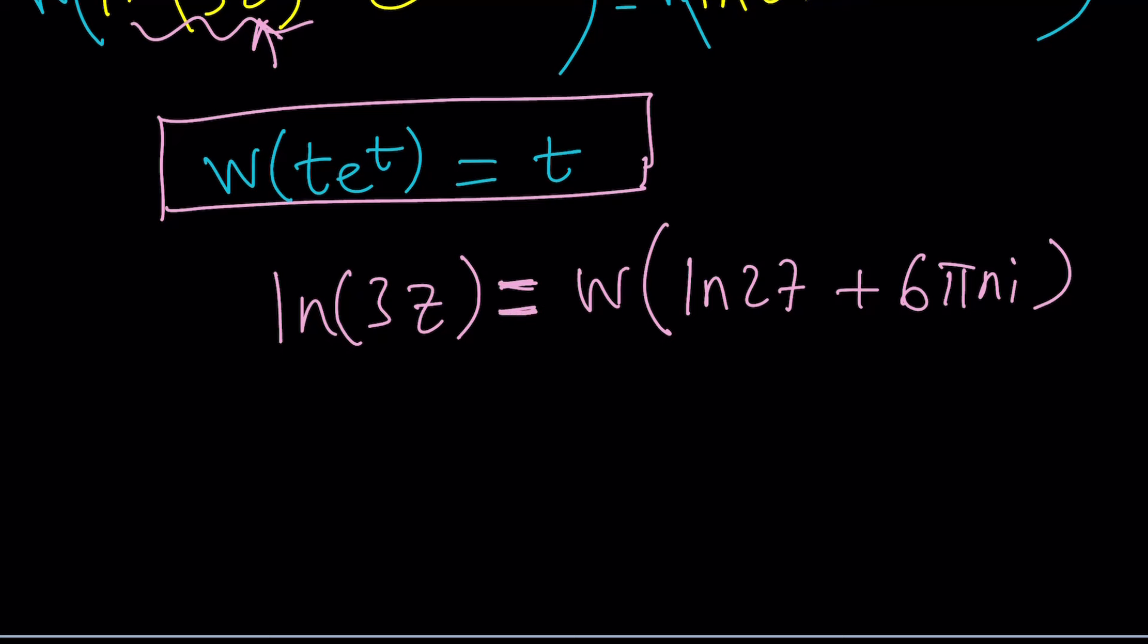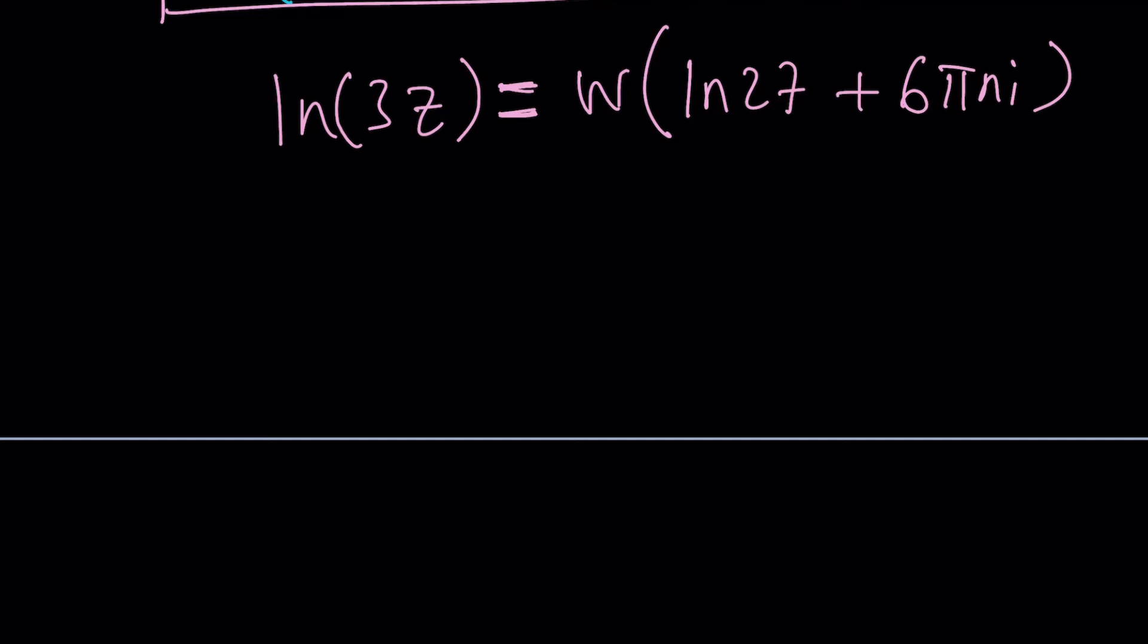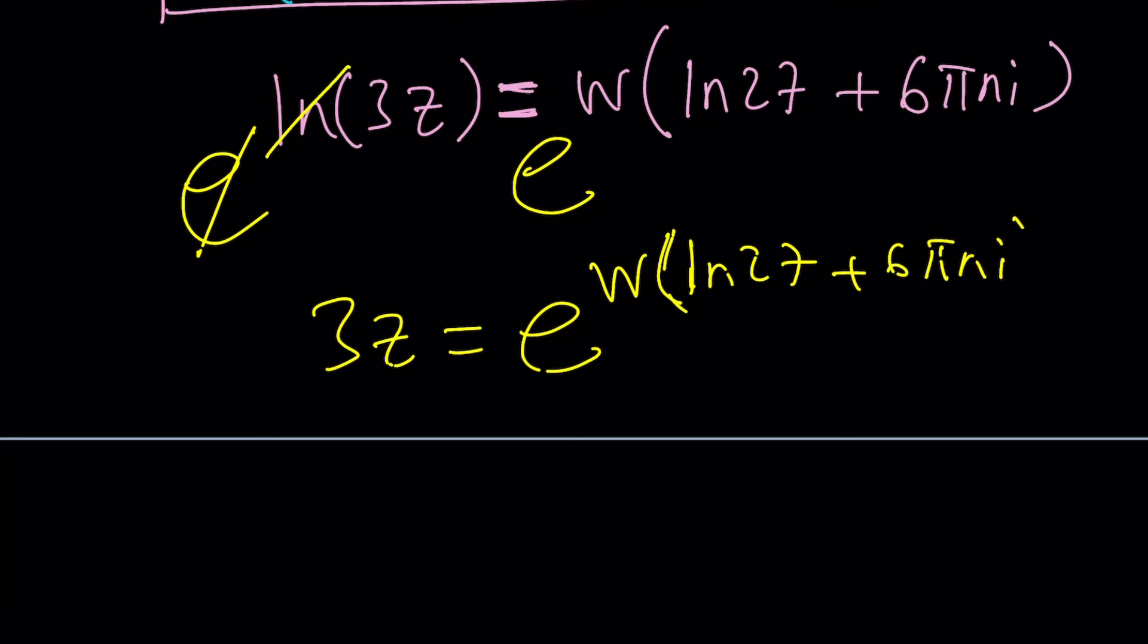Anyways, enough bashing. Now, let's go ahead and solve for z from here. What should I do? We're going to do e to the power of both sides. That's going to cancel out the e, the black pen, red pen way. And then 3z equals e to the power w ln 27 plus 6 pi n i. And, oh, by the way, I forgot to say, but I'm pretty sure you guessed it. n is an integer. You know, some people get mad when you don't write it. But it's understood hopefully. So, that's 3z.